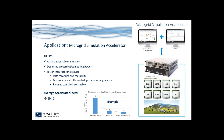The fourth application is the microgrid simulation accelerator — faster-than-real-time simulation — requiring dedicated processing power. The goal is faster-than-real-time results with data recording using fast commercial off-the-shelf products that are easily upgradable. Based on our experience, we can achieve an average acceleration factor of 10 to 1. For example, a 10-second phenomenon that takes 60 seconds offline and 10 seconds in real-time could be achieved in 6 seconds in faster-than-real-time.